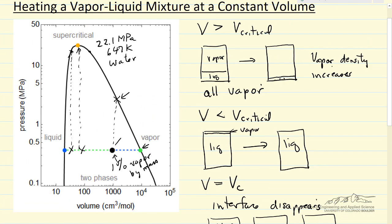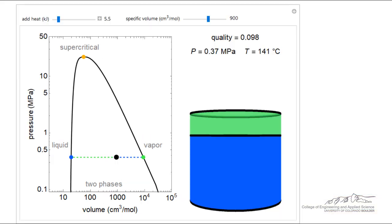So we'll look now at the simulation to demonstrate this behavior. Let's use this interactive simulation to observe behavior. We're starting out at 141 degrees C, and the quality is slightly less than 0.01, slightly less than 1% by mass of the water is in the vapor phase.